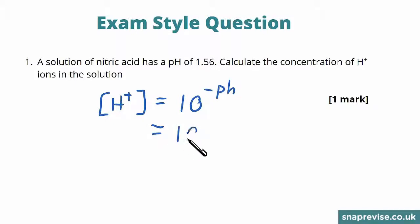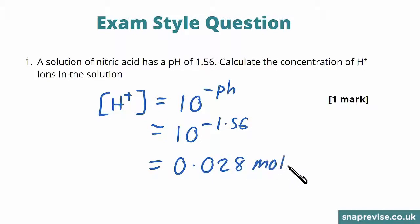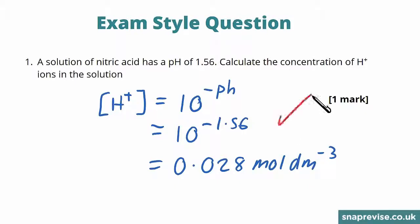In this instance that's 10 to the minus 1.56. If we put that through our calculator we find that the answer is 0.028 moles per decimetre cubed for the concentration of the H plus ions. This is just a simple calculation that revolves around remembering this formula, so it's worth one mark.